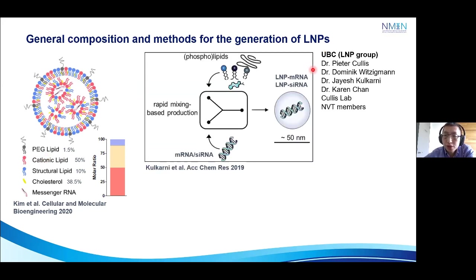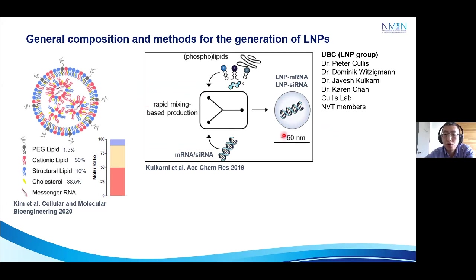We are very fortunate to collaborate with the UBC group led by Dr. Peter Cullis, Dominic, Jay, Karen, and the Cullis lab. They helped to formulate these particles by putting together phospholipids and nucleic acids through a rapid T-junction mixing mechanism to produce particles less than 100 nanometers in size.